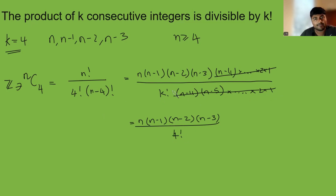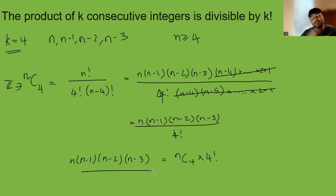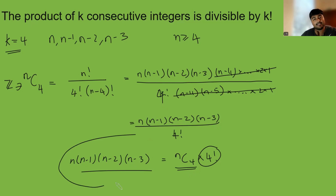Oh sorry, k is 4 here — don't know why I wrote k there. So therefore we have n times n minus 1 times n minus 2 times n minus 3 divided by 4 factorial equals n choose 4. In other words, n times n minus 1 times n minus 2 times n minus 3 equals n choose 4 times 4 factorial. This is the product of our four consecutive integers, multiplied by 4 factorial, and since n choose 4 is an integer, this thing is a multiple of 4 factorial. That gives our proof for the case k is 4.